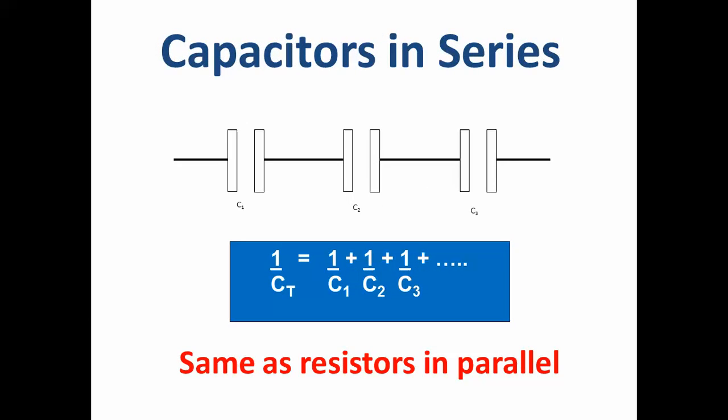In series, you need to use the 1 over x, or the x to the minus 1 button on your calculator. So the value of the capacitance is going to go down in the same way that resistors in parallel, it goes down. And the answer to the ones in series can't be any bigger than any one of those capacitors.